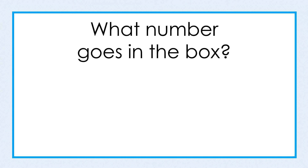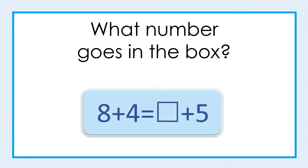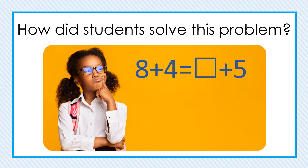Here are some common misconceptions around the equal sign. Take a moment to pause the video again and think about what number goes in the box. Less than 10 percent of students at any grade level had the answer correct. A small percentage of students knew the equal sign represents a balanced relationship between the amounts to its left and right, and they correctly found the missing number to be seven.